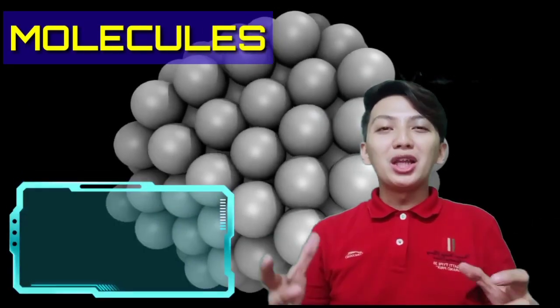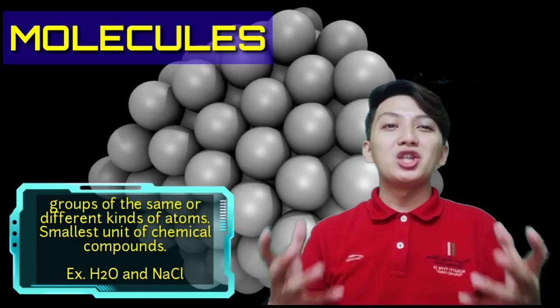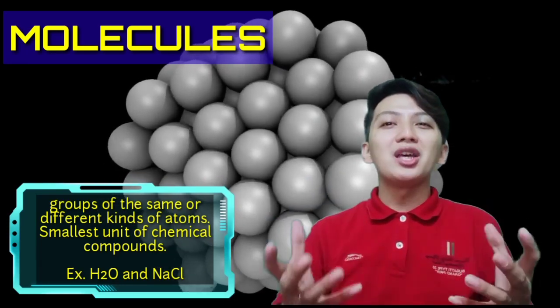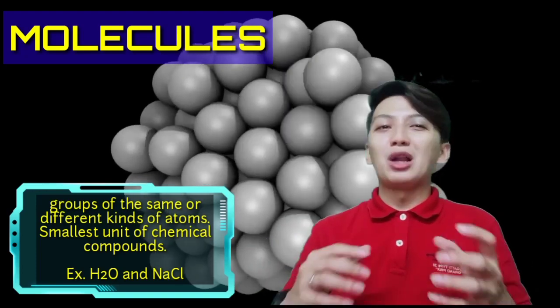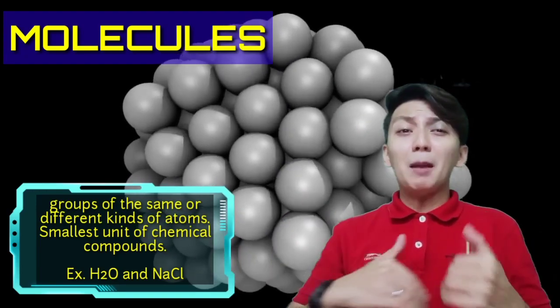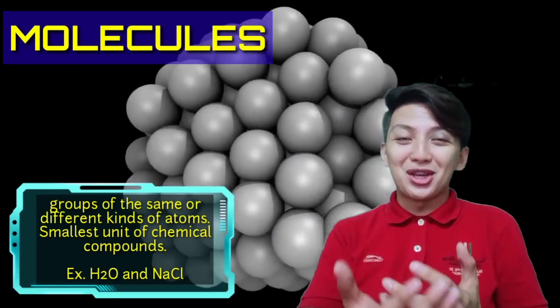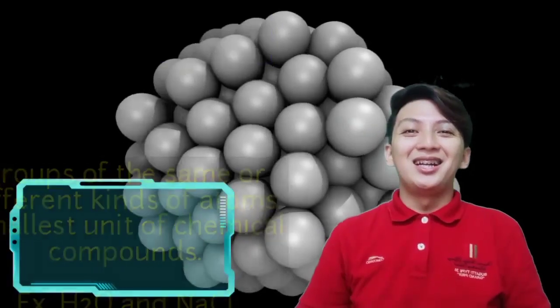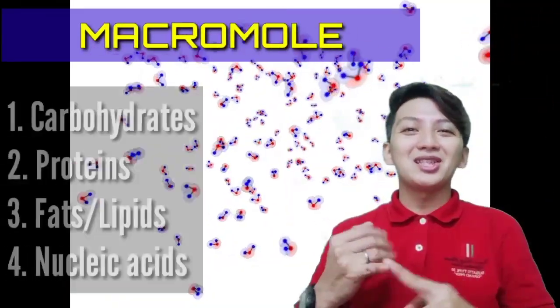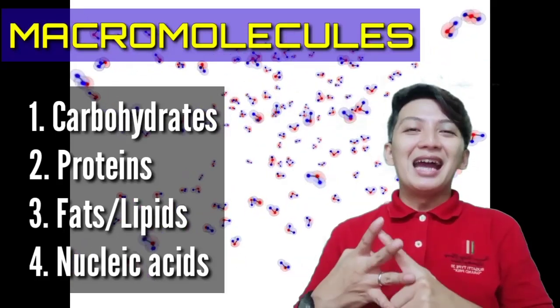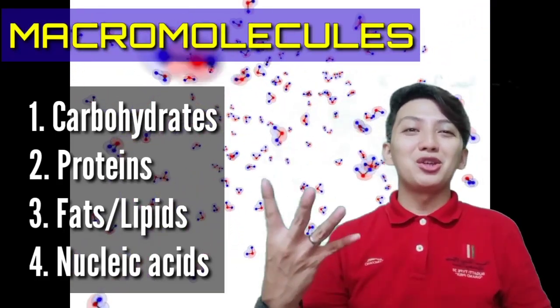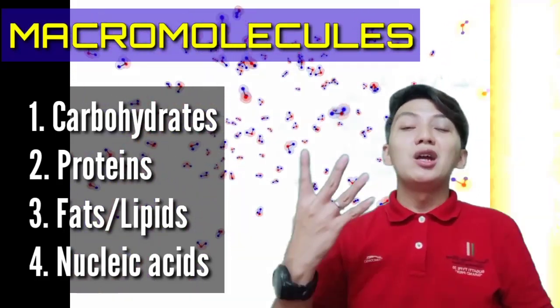Number two: when atoms are grouped together, that is what we call molecules. Molecules are the group of atoms considered as the smallest unit of most chemical compounds. Within molecules, there is what we call macromolecules. Those macromolecules include carbohydrates, proteins, fats, and nucleic acids — the macromolecules found in a living organism.